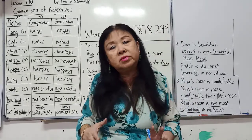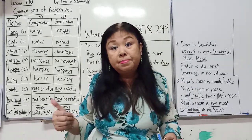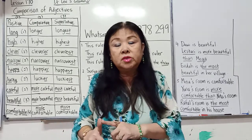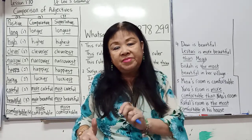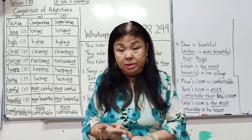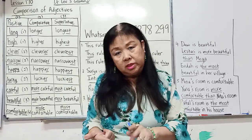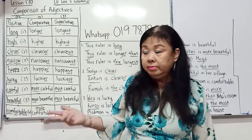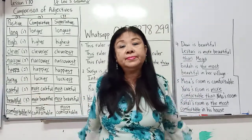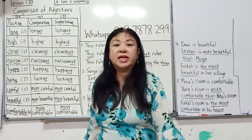Adjectives are used to describe nouns. And nouns are people — for example, boy: a clever boy, so clever is an adjective. Animals — kitten: a cute kitten, cute is an adjective. Place — a big school, big is an adjective. Things — a blue pen, blue is an adjective.